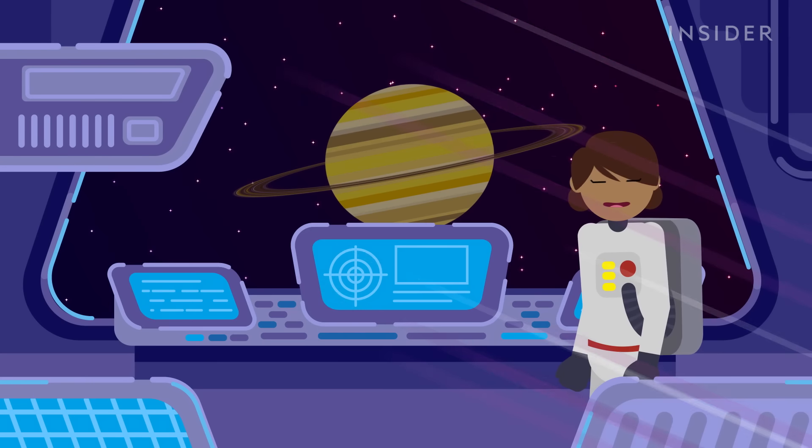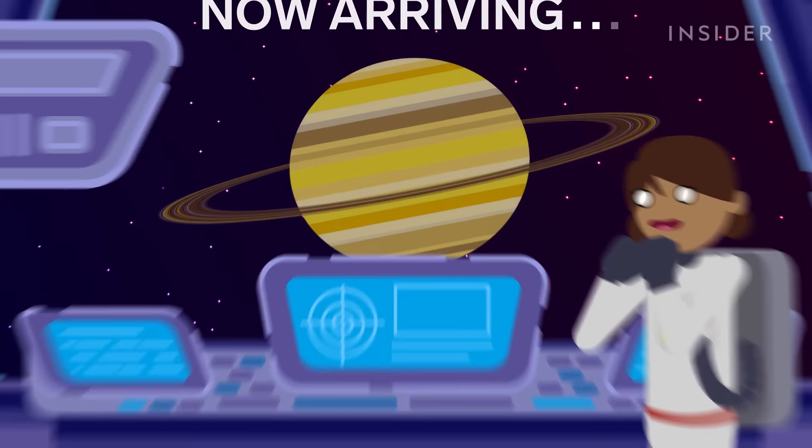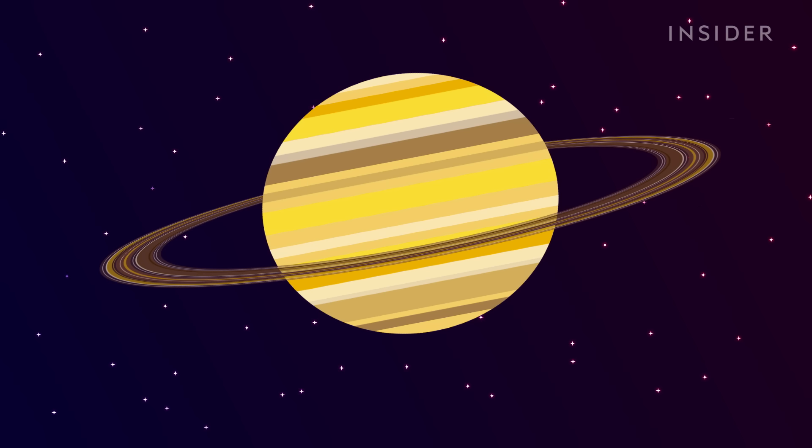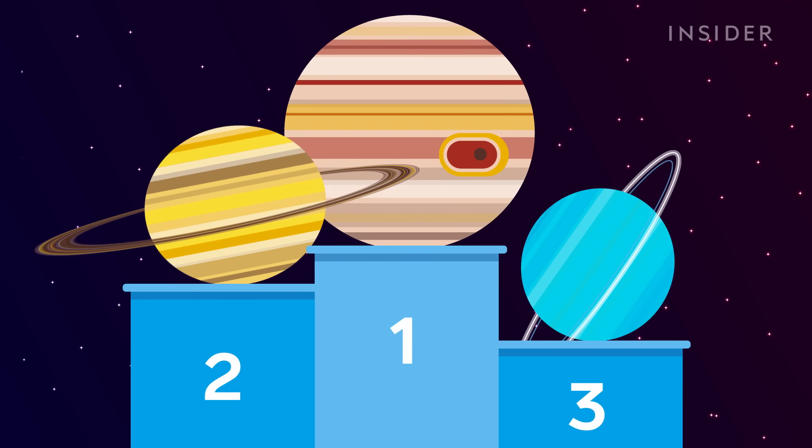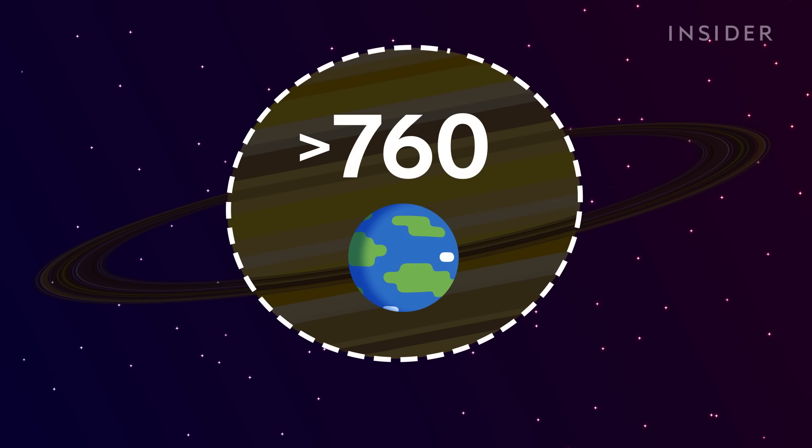Finally, you arrive and get your first glimpse of Saturn with your own eyes. It's an enormous planet, the second largest in the solar system. In fact, over 760 Earths can fit inside.